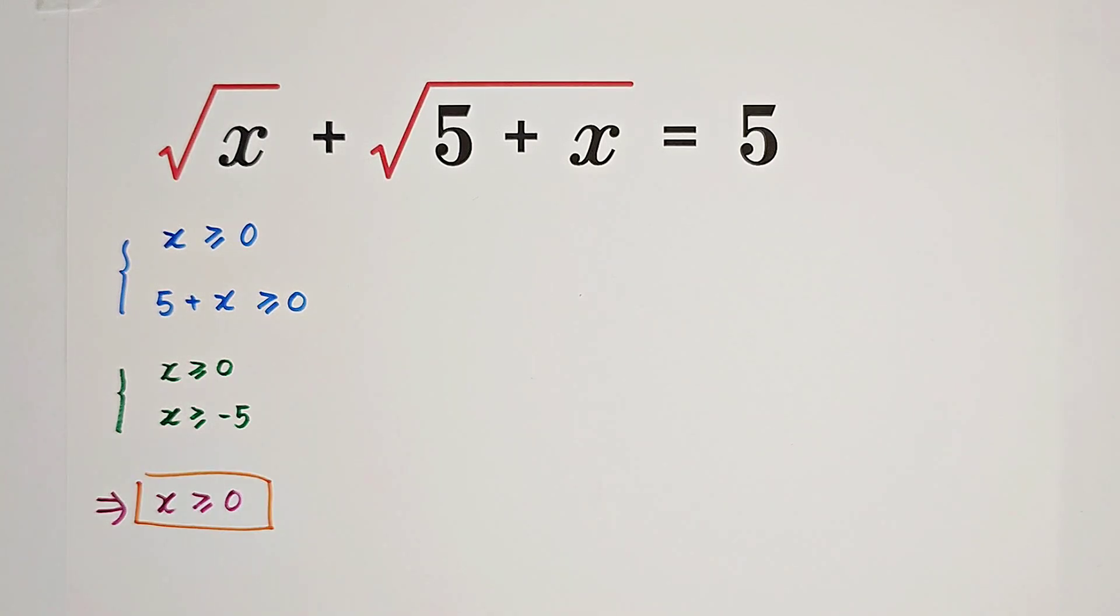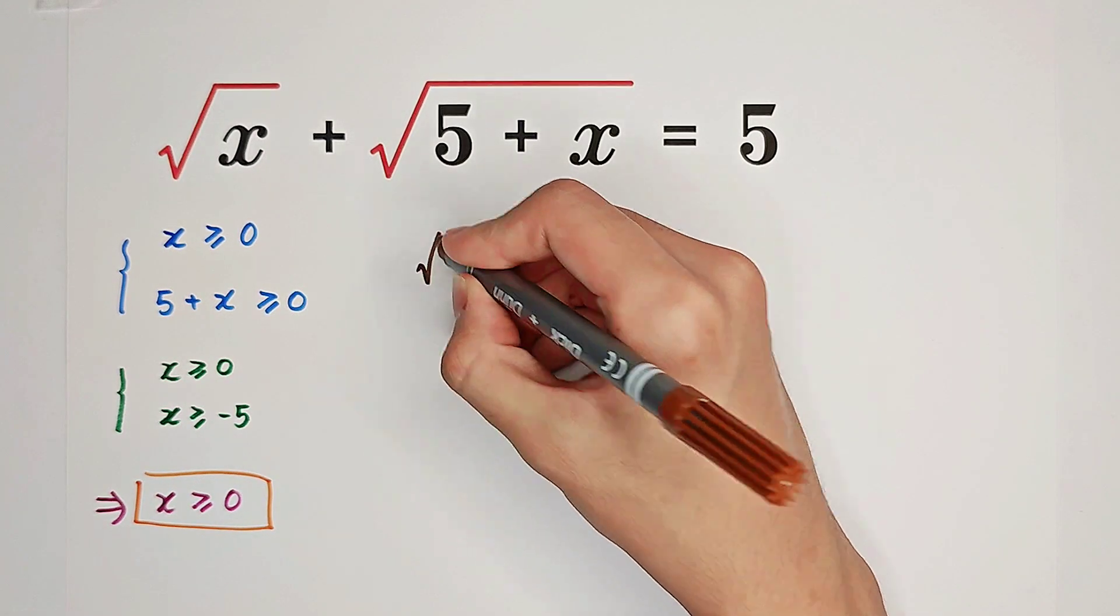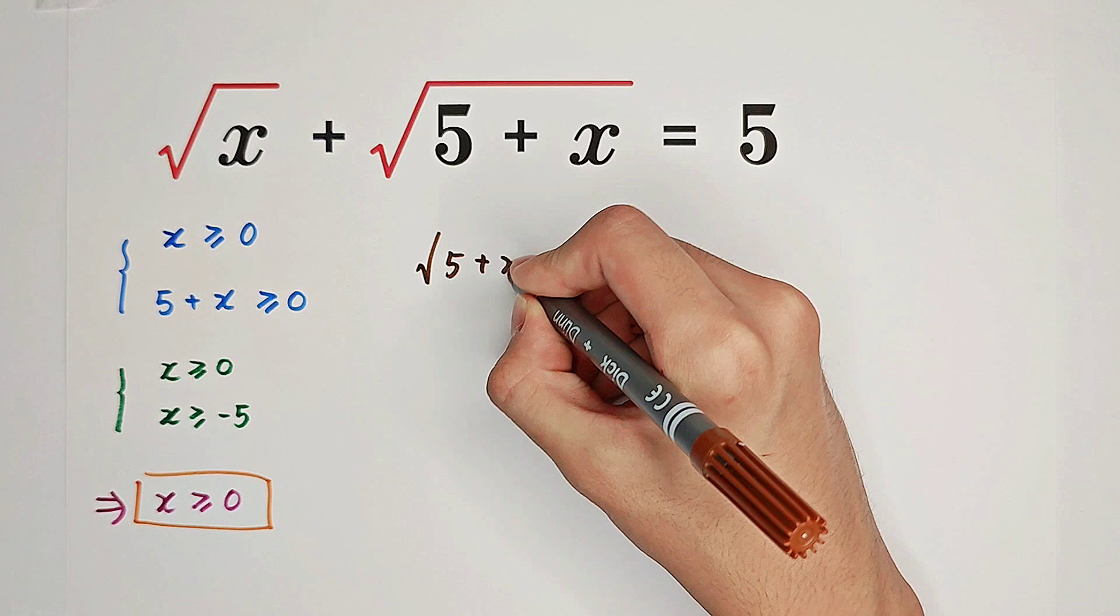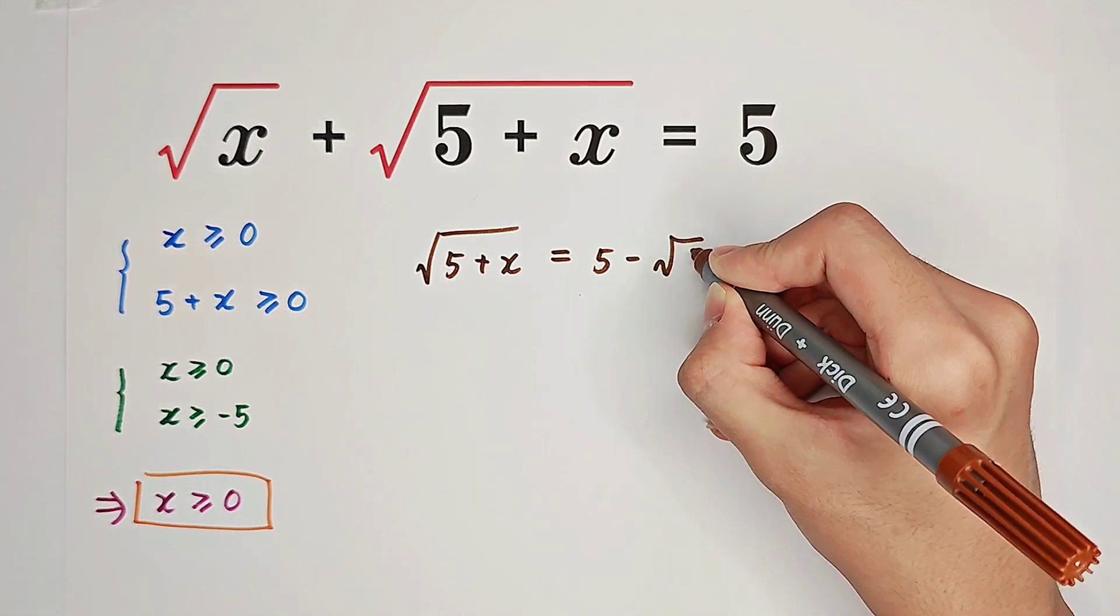Now, back to our equation. What should we do first? We can subtract square root of x from both sides. Then we get square root of 5 plus x equals 5 minus square root of x.